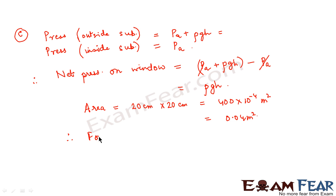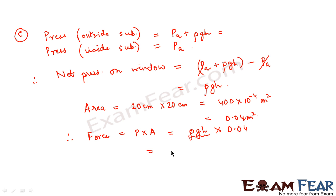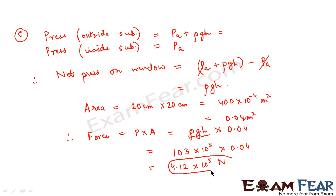Therefore, the force acting on the window equals net pressure × area = ρgH × 0.04. The value of ρgH is the gauge pressure we already calculated: 103 × 10⁵ pascals. So force = 103 × 10⁵ × 0.04, which comes out to be 4.12 × 10⁵ newtons. This is the force that will act on the window of the submarine.